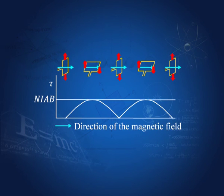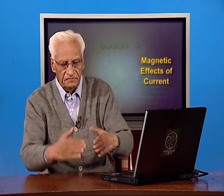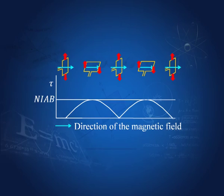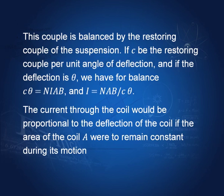I have shown five positions of the coil. When the plane of the coil is parallel to the magnetic field, the two forces are in the same line, so the couple is zero and torque is zero. When the coil is perpendicular to the magnetic field, the two forces are equal and opposite with maximum separation — giving maximum torque. The torque changes with position and therefore we cannot say that I is proportional to theta, because A is not remaining constant.